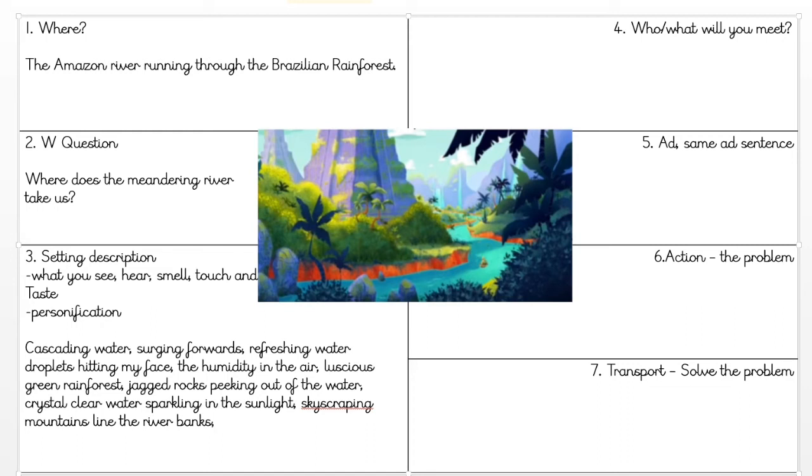I'm also going to describe these mountains that are on the riverbanks: skyscraping mountains line the riverbanks. I might say something about a tree branch reaching across the water. So I've got see, I've got hear, I've got smell and touch. I haven't got taste. Taste is quite a hard one actually, so maybe we could have taste the crispness of the water droplets, linking that to when they hit his face.